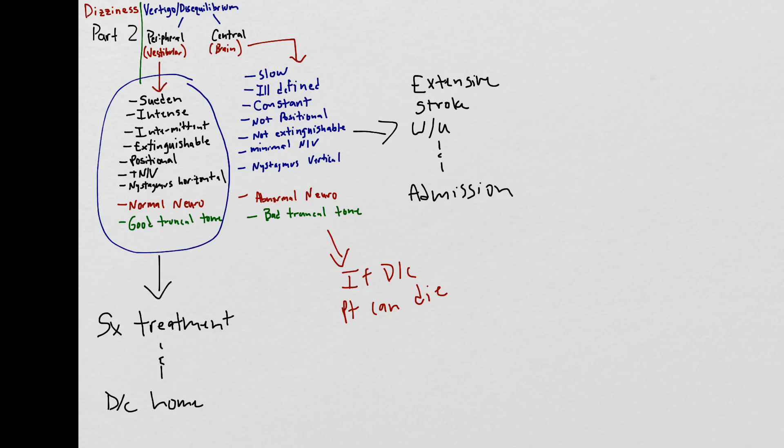So when I approach these patients I start at the default position of saying that I think this is central vertigo and then I focus my whole encounter on trying to convince myself that it's not central vertigo. If at the end of the encounter I can't confidently convince myself that this patient has peripheral vertigo then I stay on my default position that this is central vertigo and proceed to the extensive workup.